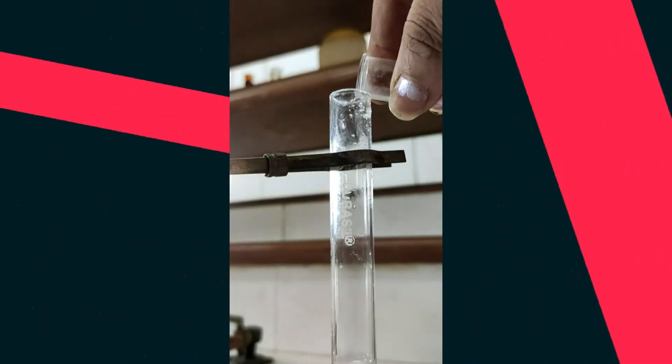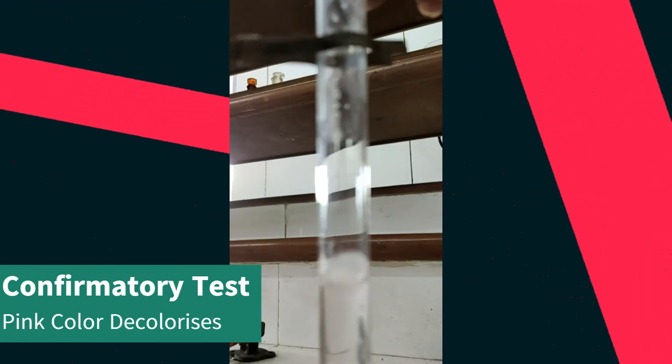So for the reaction you need to make a solution of both. Make a dilute solution of KMnO4 added to oxalic acid. Now you can see on this screen when you add that dilute solution, the color decolorizes.